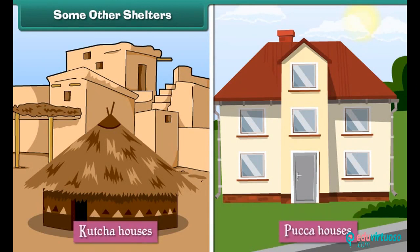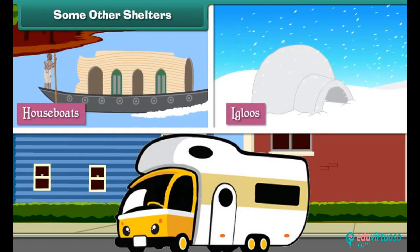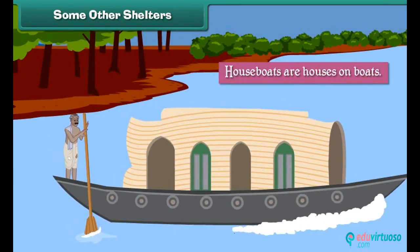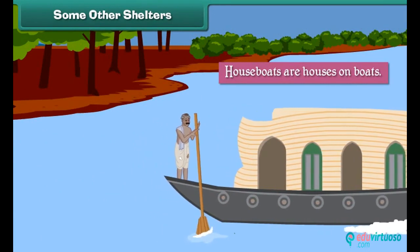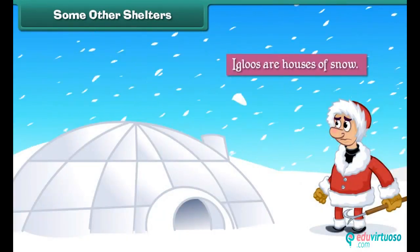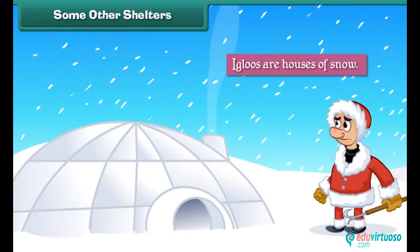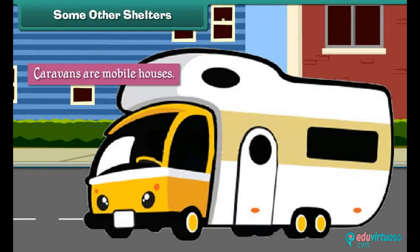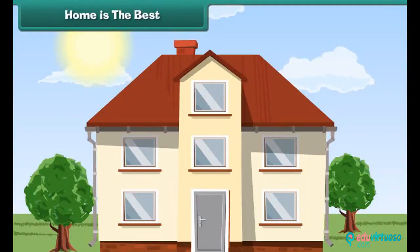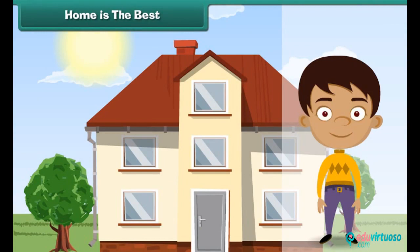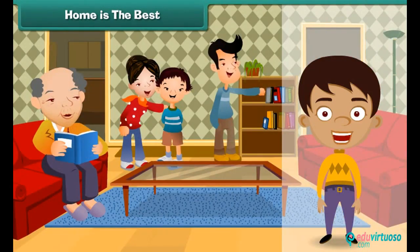Apart from kutcha and pukka houses, there are some other forms of shelter. Houseboats are houses on boats; they float on water and are found in Kerala, Kashmir, etc. Igloos are houses of snow made by Eskimos, found in Greenland. Caravans are mobile houses with wheels that can move from place to place; they are used by gypsies who wander from place to place. A home is a house occupied by a family — their laughter, happiness and love make a house a home.